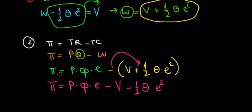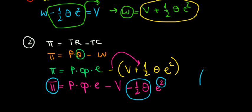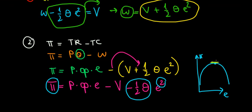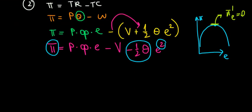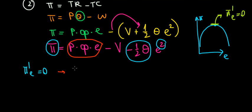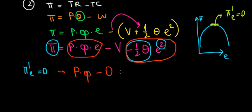Notice that we have a quadratic relationship between profit and effort, because effort appears squared with coefficient negative one-half theta — so it's a concave parabola. The maximum profit is at the peak, where the derivative of profit with respect to effort equals zero. Differentiating: the derivative of P times theta times E is P times theta; the derivative of the constant V is zero; the derivative of one-half theta e squared is theta times E.